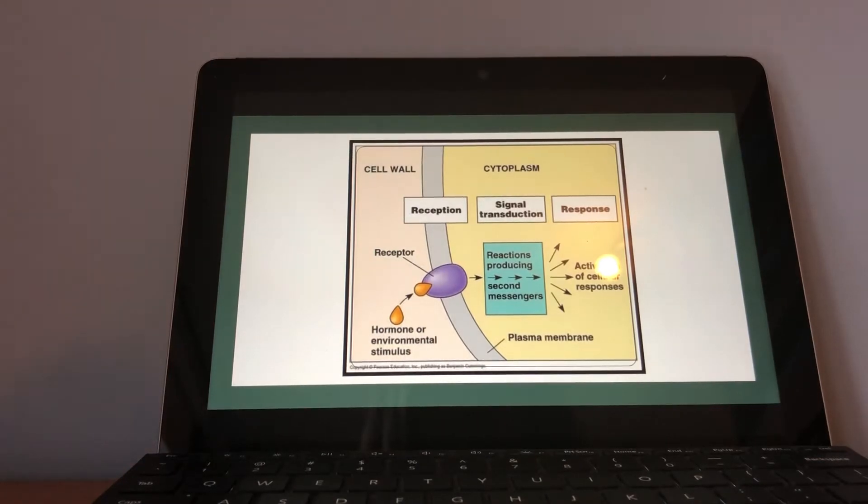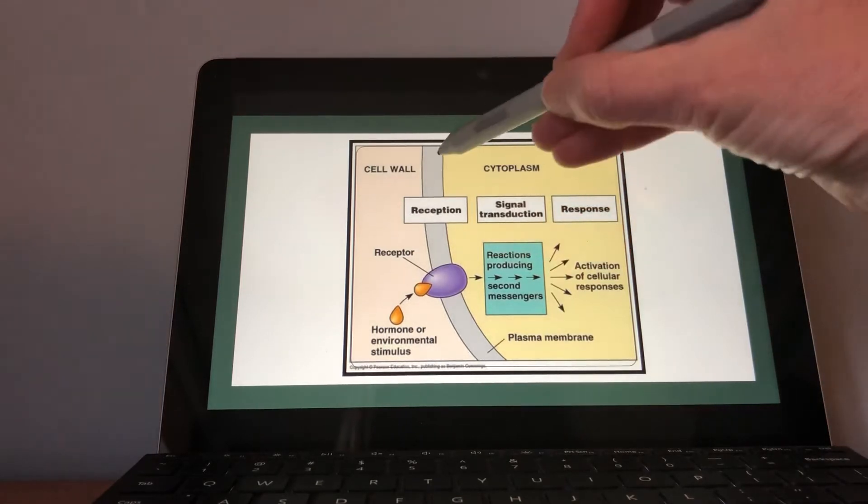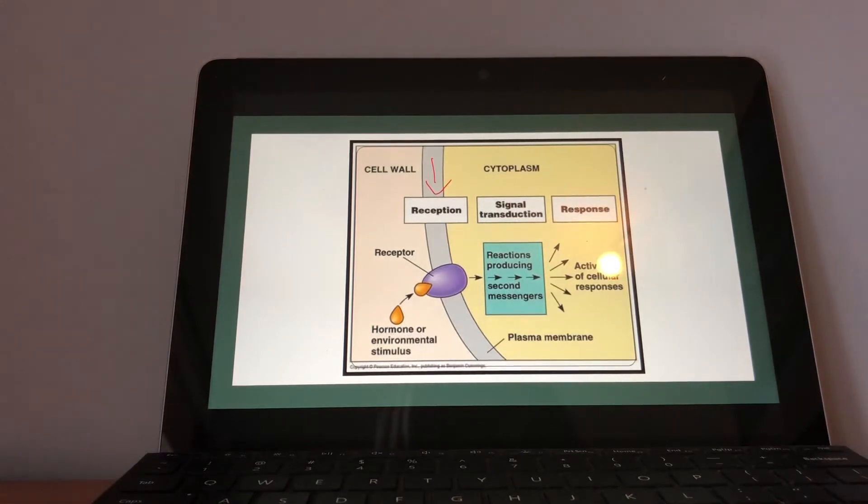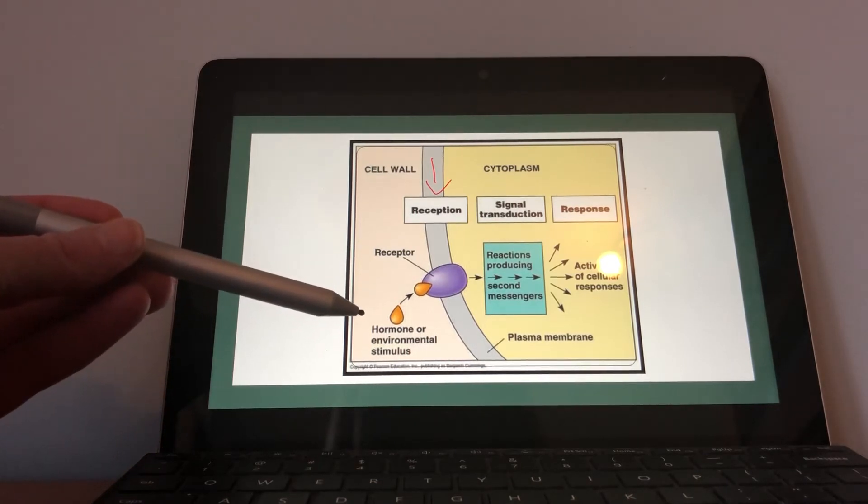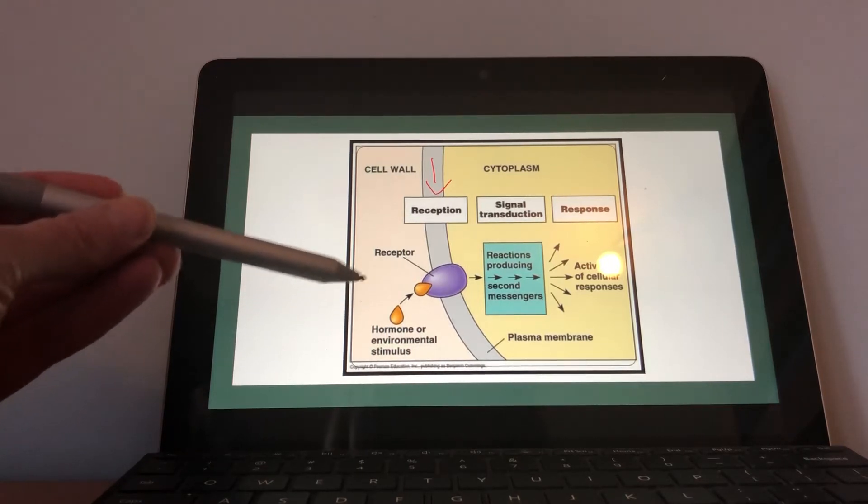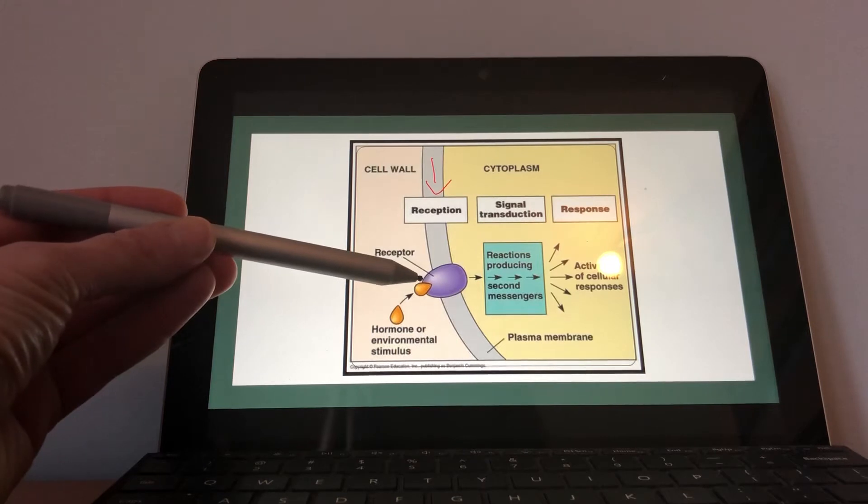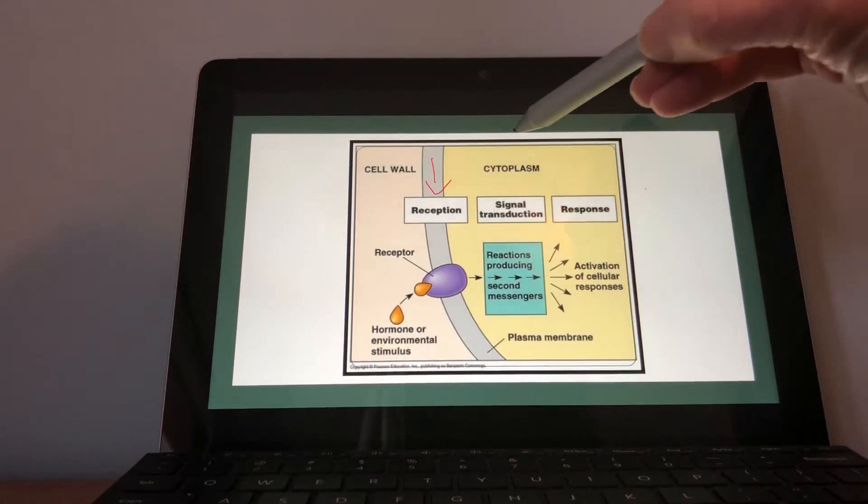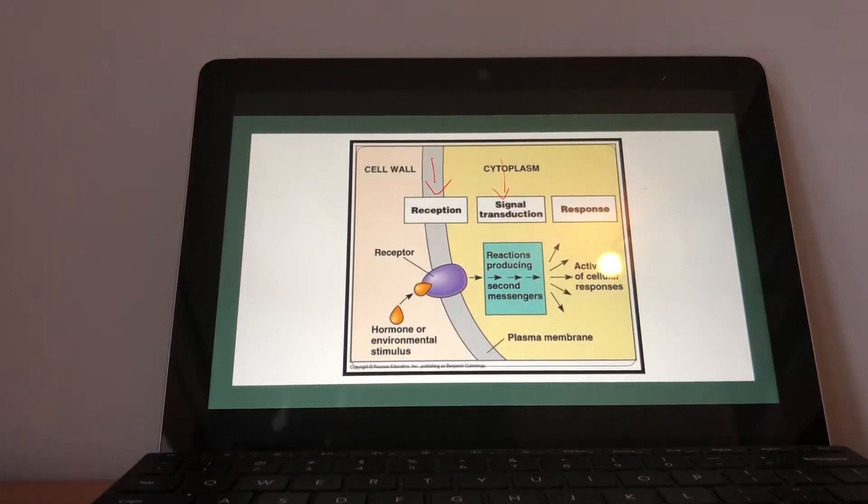Basically, the beginning to this is when you're looking at any scenario where the cell is going to respond to a certain situation, there are three main processes. The first one, reception, would be as you can see in the diagram here. It doesn't have to necessarily be a hormone, although we will be talking about that quite a bit. It could be any type of ligand. The ligand comes and attaches to the receptor.